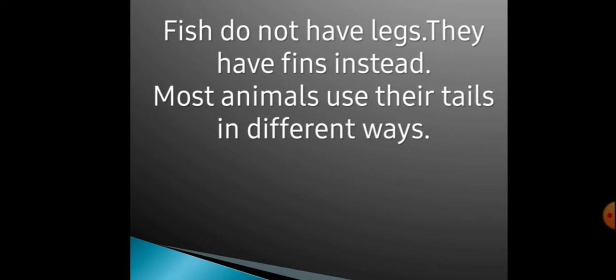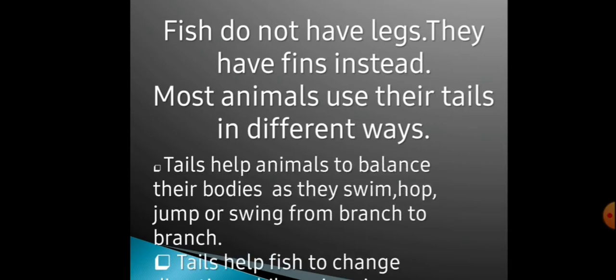Most animals use their tails in different ways. Tails help animals to balance their bodies as they swim, hop, jump or swing from branch to branch. Jo animal ki tail hoti hai, woh unka jo body hai usko balance karne mein help karta hai. Fish ko swim karne mein help karta hai, kangaroo ko hop karne mein help karta hai, aur jo monkey branch to branch jaata hai, us mein bhi uski tail help karti hai.